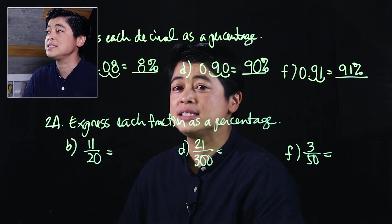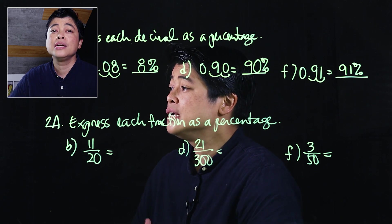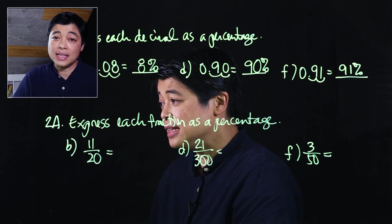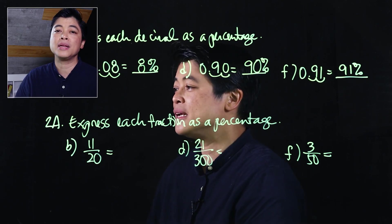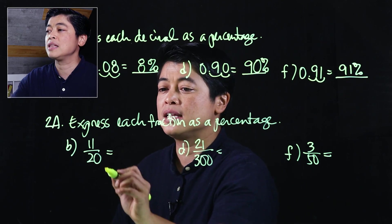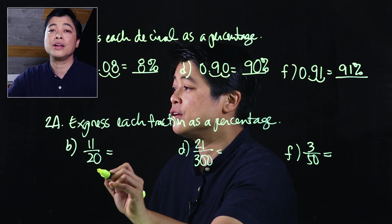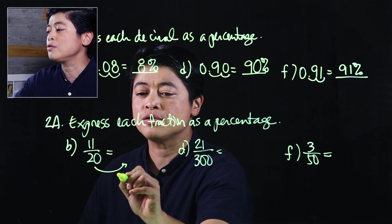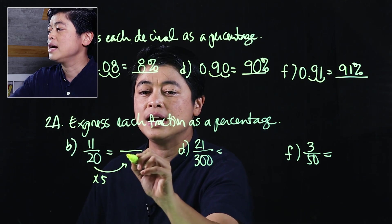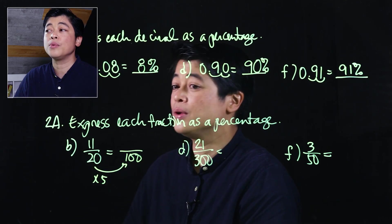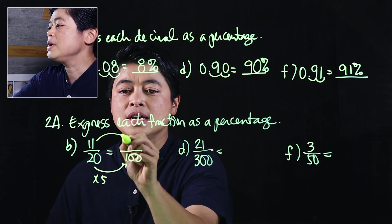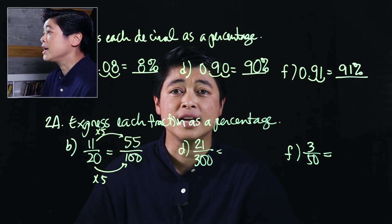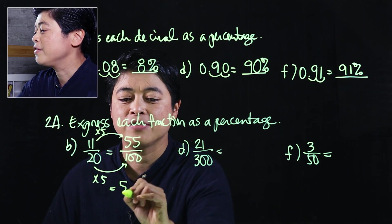Earlier I said we can do it two ways: we can either divide and then move the decimal two places to the right, or we can just make the denominator over 100. Here since 20 I can make to 100 easily, that would be times 5, making it over 100. If I do times 5 here, that makes it 55 over 100, making it 55 percent.